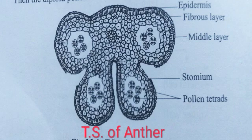The epidermis function is protective. Next, endothecium is the second layer of the anther wall. It is also known as the fibrous layer. You can see in the figure, epidermis followed by the fibrous layer.